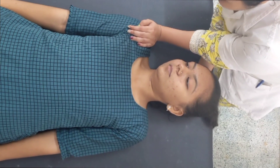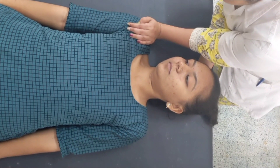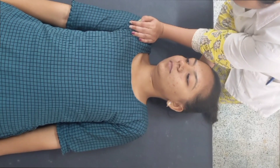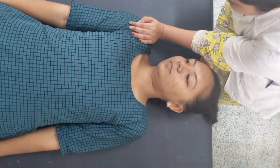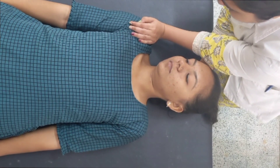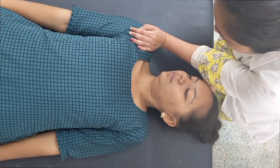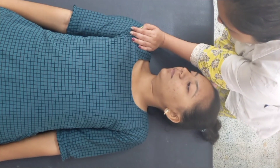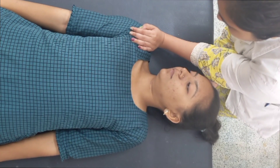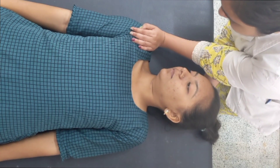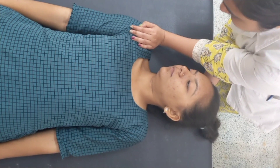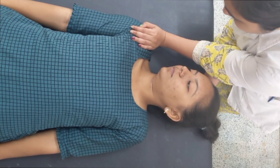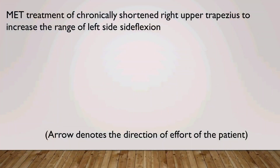Now ask the patient to completely relax. Then the therapist moves the head or neck to increase the degree of side bending and rotation where it is stabilized. Repeat the same procedure 2 more times — that's how we get a new range. Dose: 3 repetitions, 1 set.